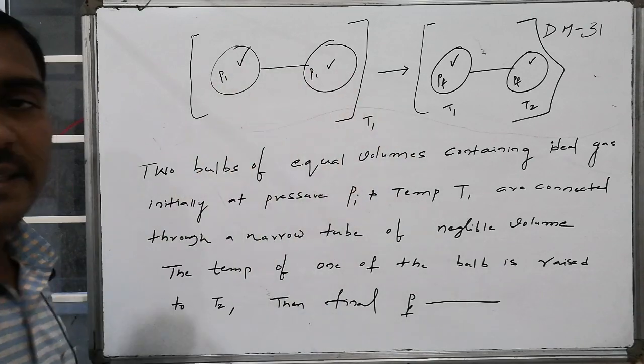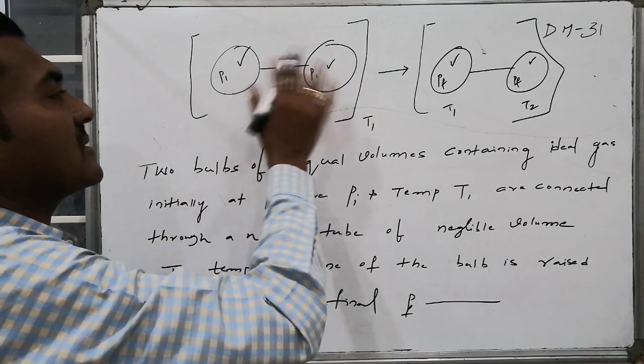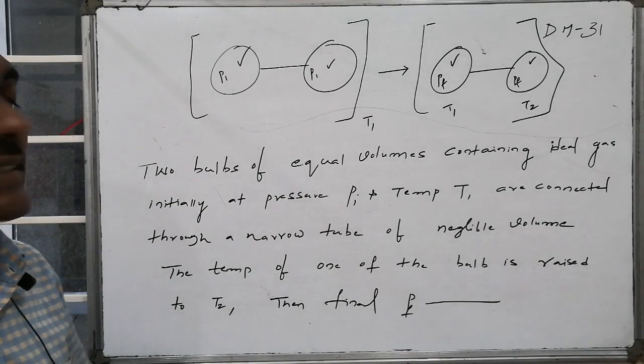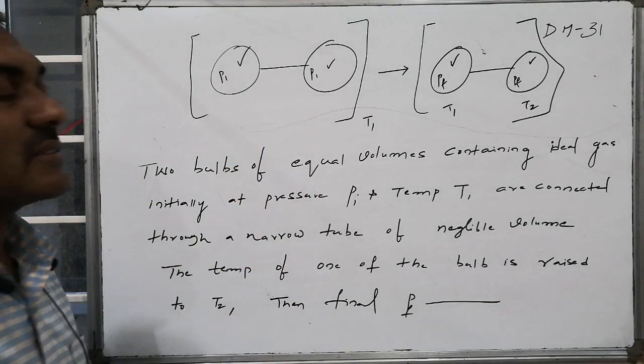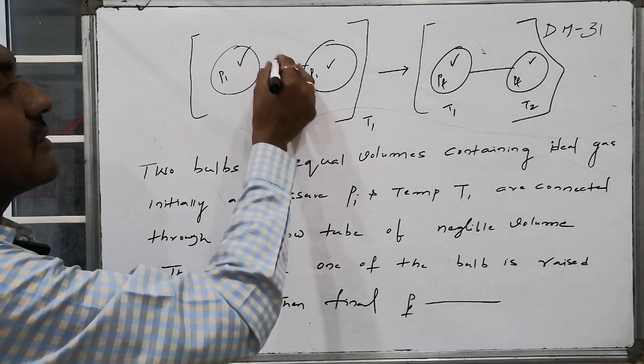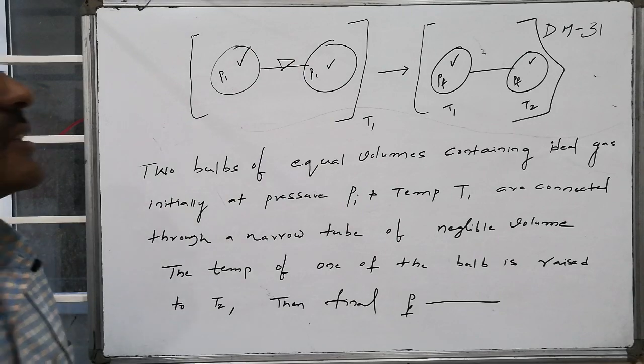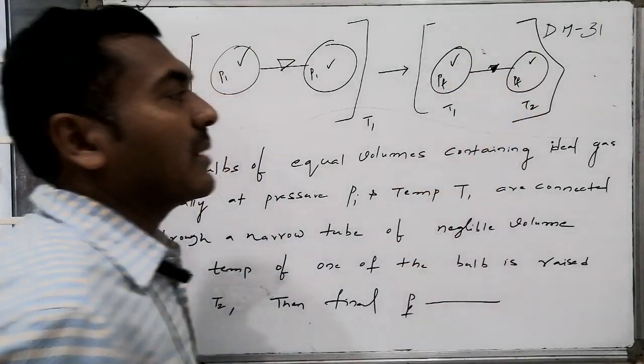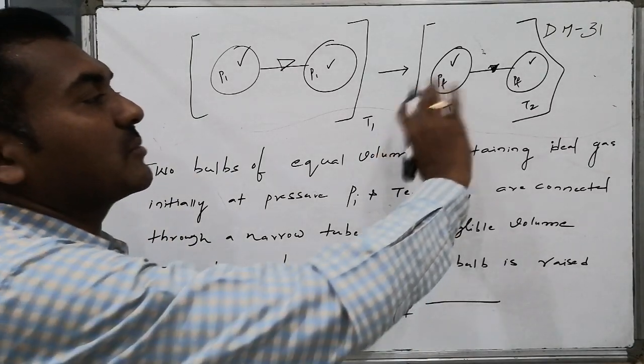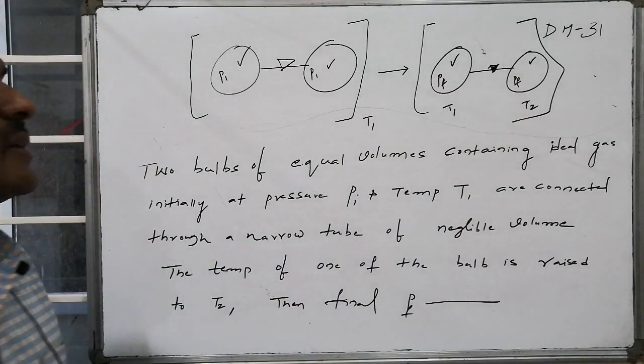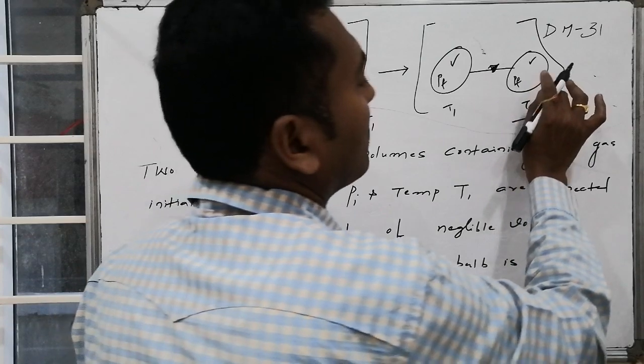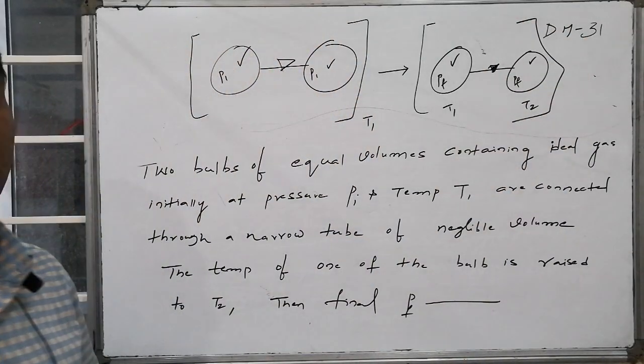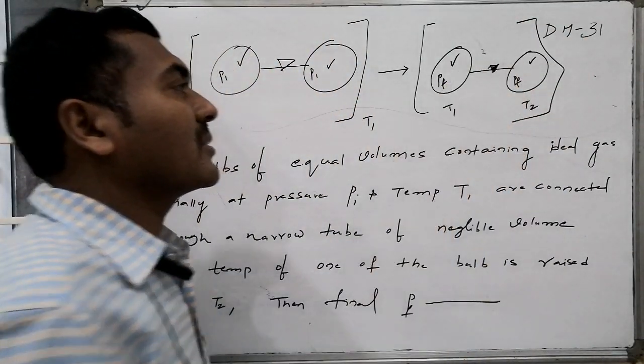Both are present at the same temperature T1. The pressure and volumes in the first and second bulbs: P1 is the pressure, V is the volume. When the barricade between them is opened through the narrow vessel, gas can move from one part to the other. Then one of the bulb's temperature is raised to T2.